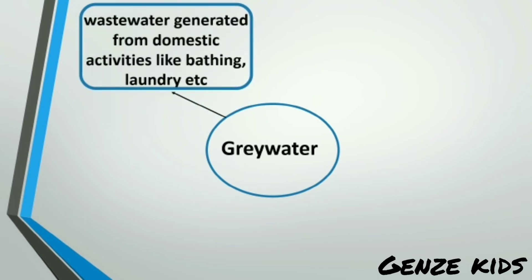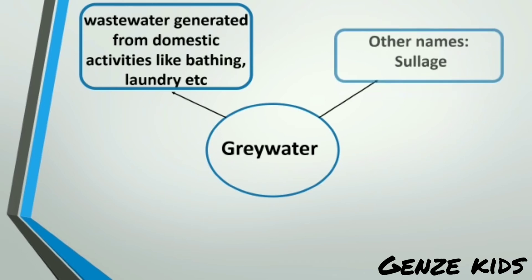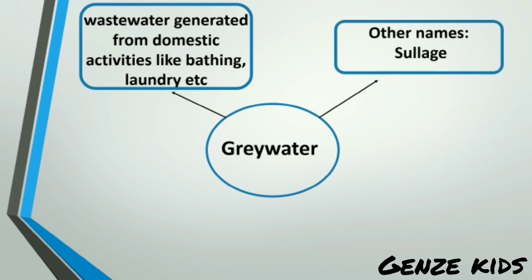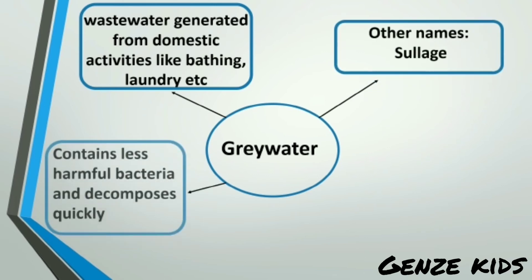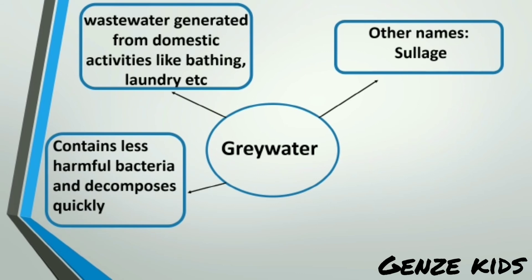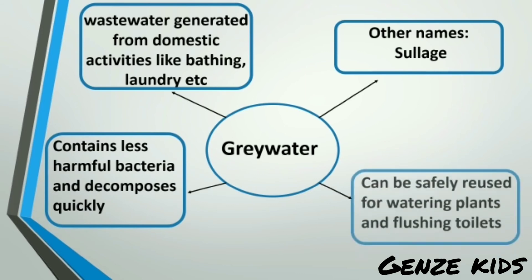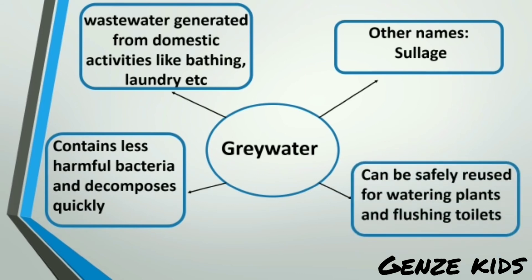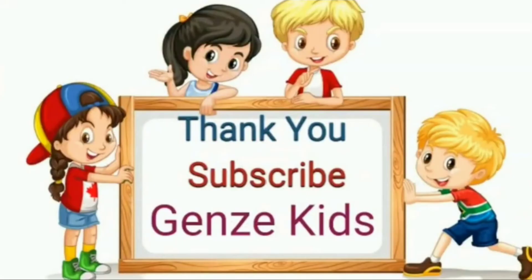Gray water is wastewater generated from domestic activities like bathing and laundry. Other names include sullage. It contains less harmful bacteria, decomposes quickly, and can be safely reused for watering plants and flushing toilets.